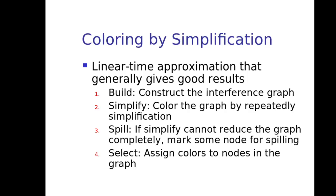If you want to color by simplification, linear time approximation that generally gives good result. You will build, means you will construct the interference graph. You will color the graph by repeatedly simplification and you will spill. If simplify cannot reduce the graph completely, you will mark some nodes for spilling that these nodes can be spilled. Last is select where you will assign color to nodes in the graph. This is how this coloring can help you in global allocation of these registers.